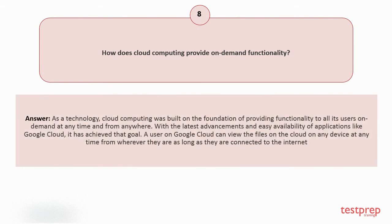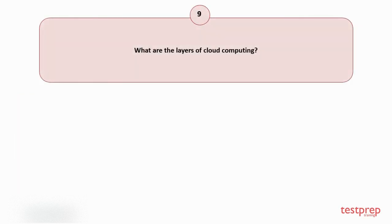Question number eight: How does cloud computing provide on-demand functionality? Cloud computing was built on the foundation of providing functionality to all its users on demand, at any time and from anywhere. With advancements and easy availability of applications like Google Cloud, a user can view files on the cloud on any device at any time from wherever they are, as long as they are connected to the internet.